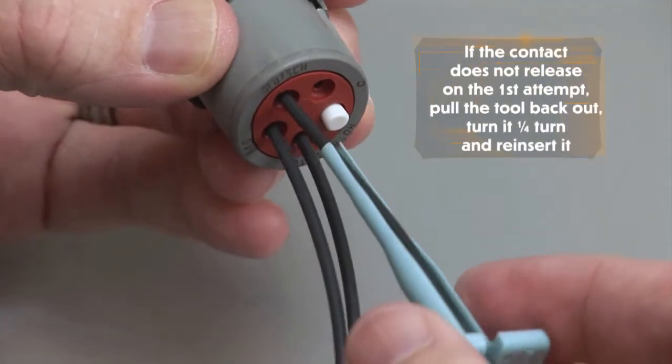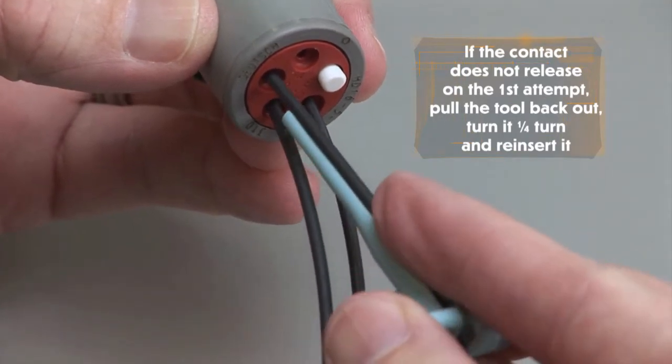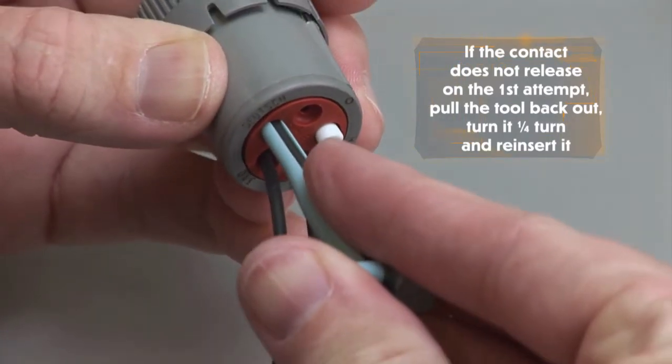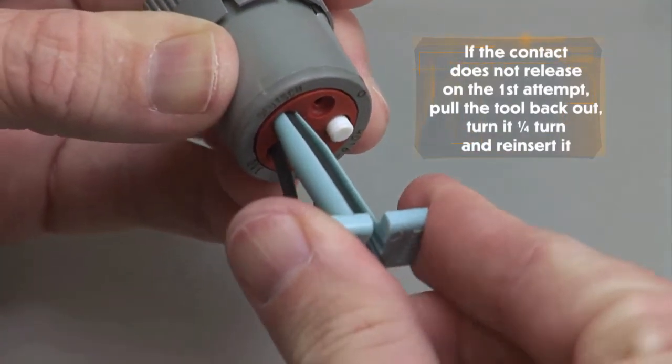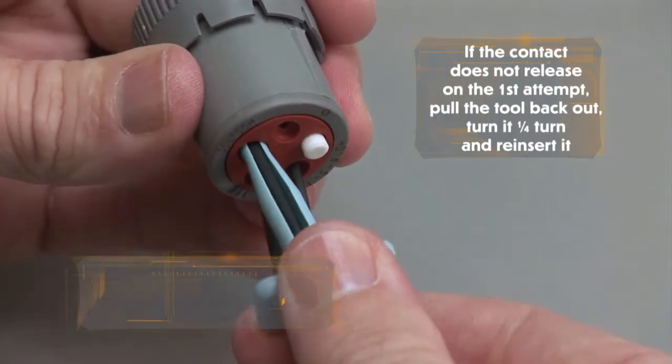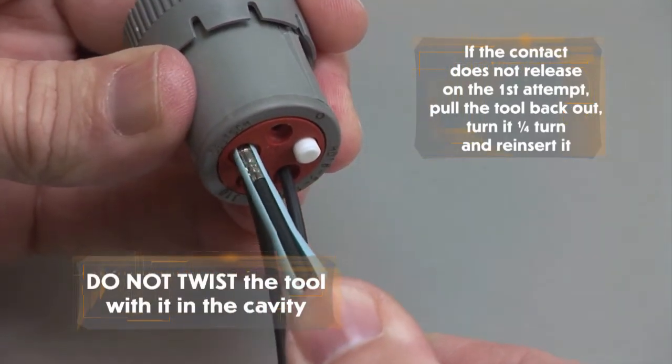If the contact does not release on the first attempt, pull the tool back out, turn it one quarter turn and reinsert it. Do not twist the tool with it in the cavity.